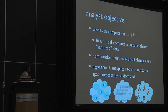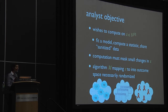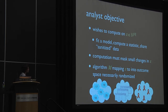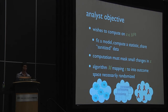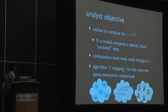Our goal is for our computation to mask small changes in the input database. We don't want the results to be very sensitive to small changes. We'll be developing algorithms — randomized mappings from database space into some outcome space. The outcome space could be a space of possible statistics, sanitized databases, policy decisions, or models we wish to fit to the data.